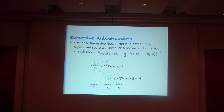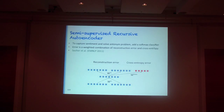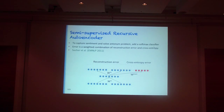At every node of the tree, we want to ask how well can you reconstruct your children after piping them through this information bottleneck — where you have two n-dimensional representations, map to n-dimensions, and then map back to 2n. But that alone wouldn't solve our antonym problem, because it's entirely unsupervised.